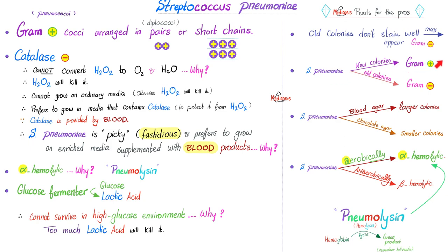Most of the time they appear purple, i.e. gram-positive. But old colonies do not stain well, and they can appear pink, as if they are gram-negative.